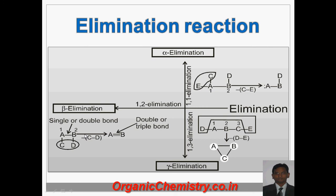If two parts are removed from 1-2 position, it is called beta elimination. And if two parts are removed from 1 and 3 position, it is called gamma elimination. In all beta eliminations, there is always formation of a multiple bond, and beta elimination is the general elimination reaction.